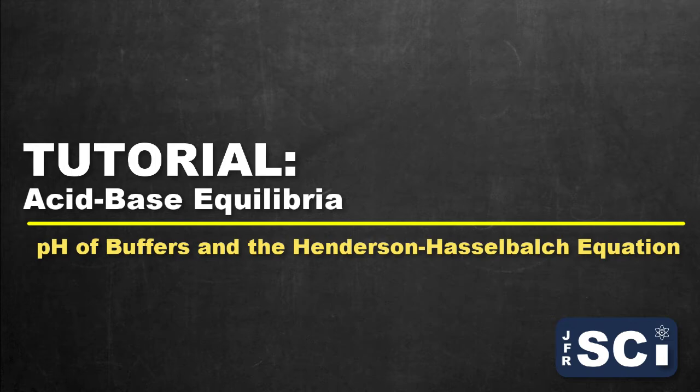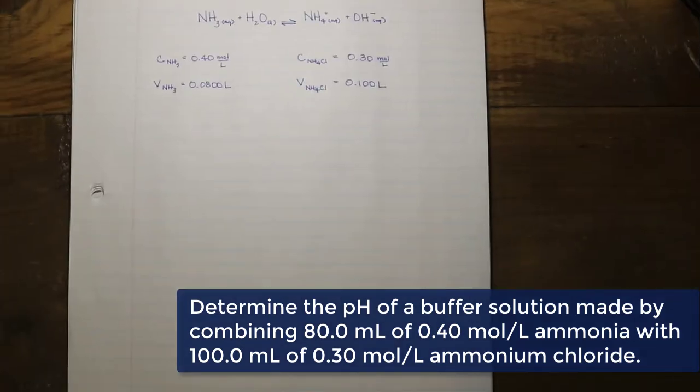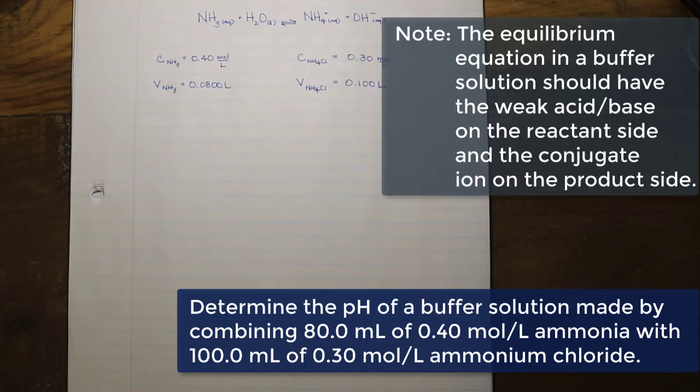Now in this particular instance, as you can see from the example problem, we have a buffer solution made up of ammonia and ammonium chloride. The first thing I ask students to do is identify that you do in fact have a buffer scenario, meaning there is no actual reaction between these two substances.